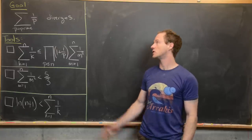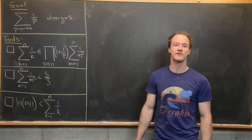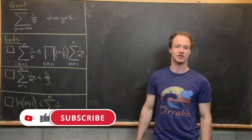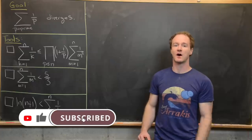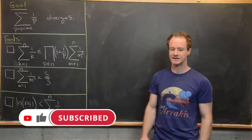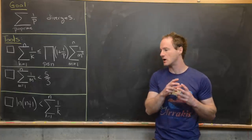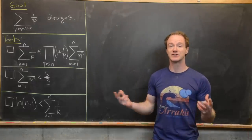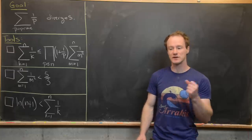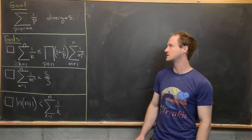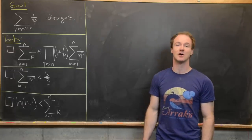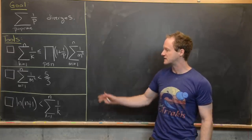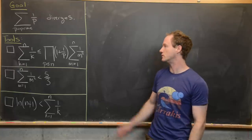Here we're going to prove the classic result that the sum of the reciprocal of the prime numbers diverges. It's more well known that the harmonic series — the sum of the reciprocal of all of the natural numbers — diverges, but it turns out if you limit that sum to only reciprocals of primes, it also diverges. We're going to do that using three inequalities which we will prove.